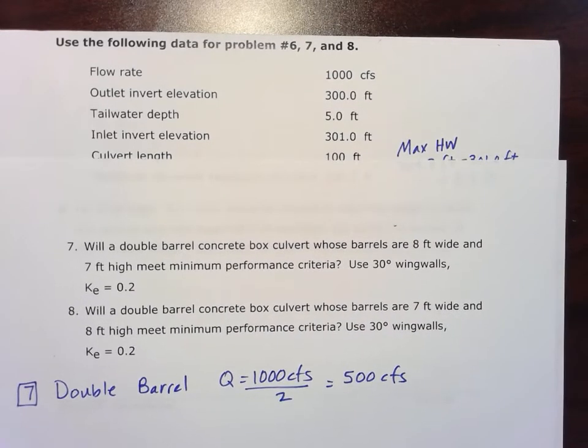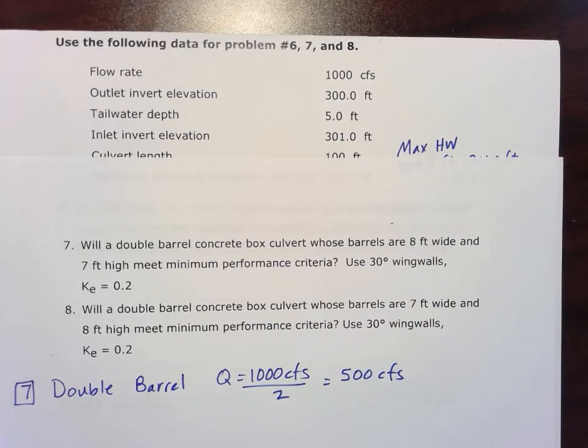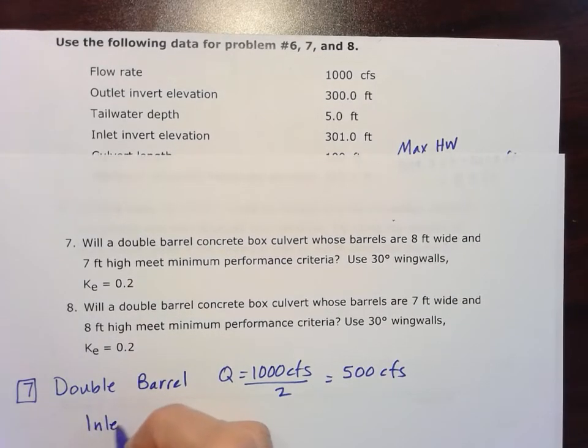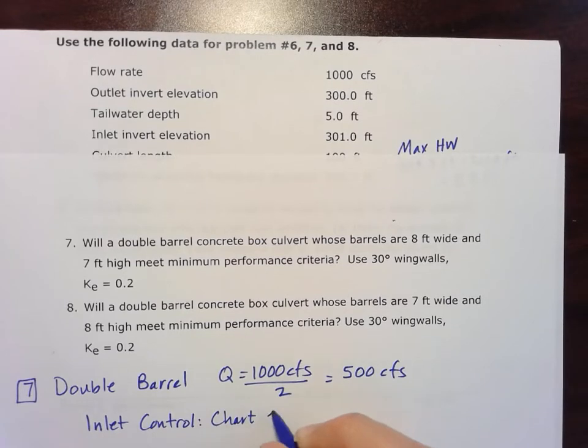Okay, we are also going to use these 30 degree wing walls. So that means for that inlet control, we'll be in type 1. So let's do that first. Our inlet control. And we're going to use Chart 1, type 1 with those wing walls.